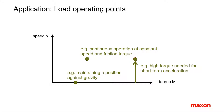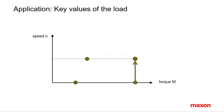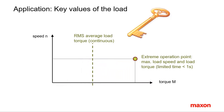The use of a gearhead is advisable if the speed is low, typically well below 1000 RPM, and the torque is relatively high. Regarding torque, we condense all the operation points into a few key values: the average RMS load torque and the extreme operation point, usually at the end of the acceleration where the maximum load speed and maximum load torque occur.